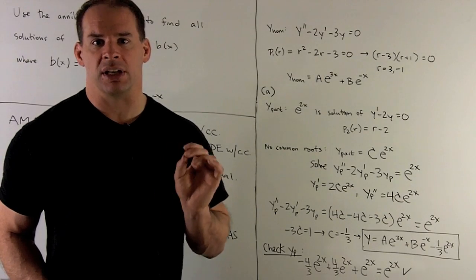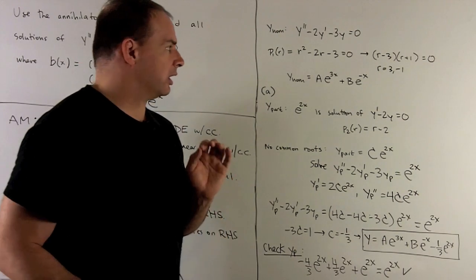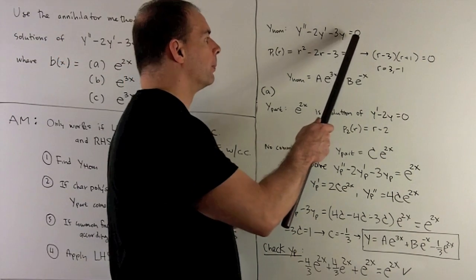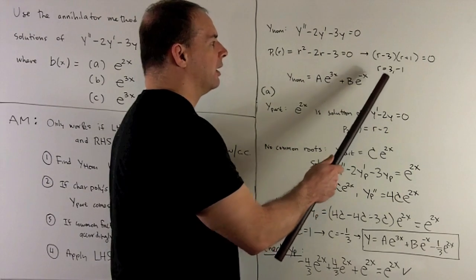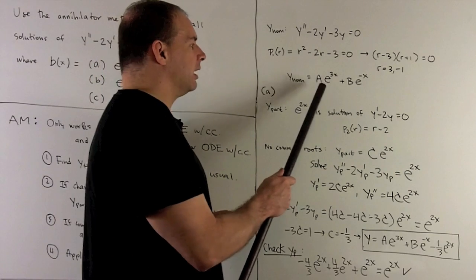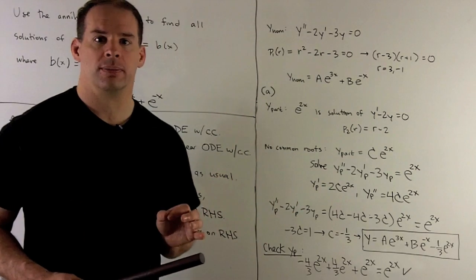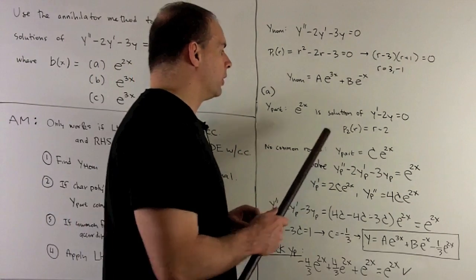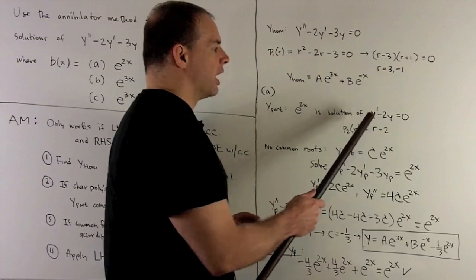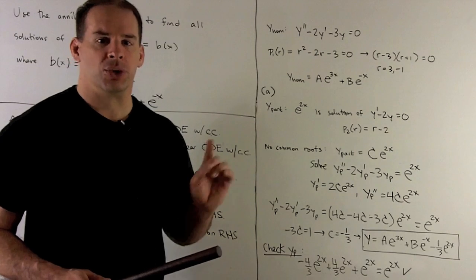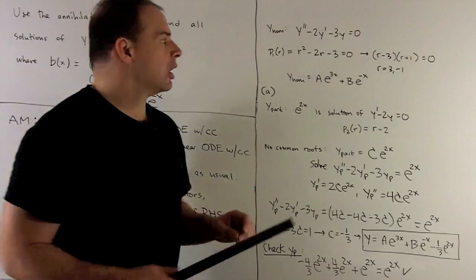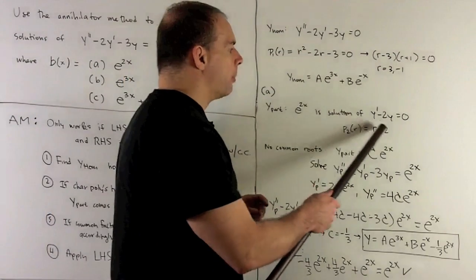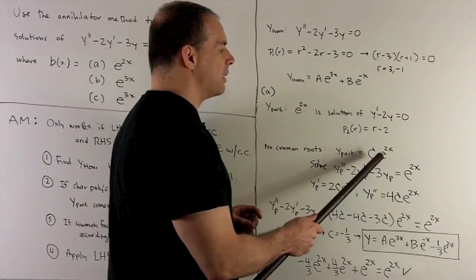Now consider the case where b(x) = e^(2x). For the homogeneous part, we set the right-hand side to zero and get the characteristic polynomial with roots 3 and -1. So the homogeneous part is a·e^(3x) + b·e^(-x). For the particular part, e^(2x) is a solution of y' - 2y = 0, giving characteristic polynomial r - 2. There are no common roots with r - 3, r + 1, so our particular solution is of the form c·e^(2x).